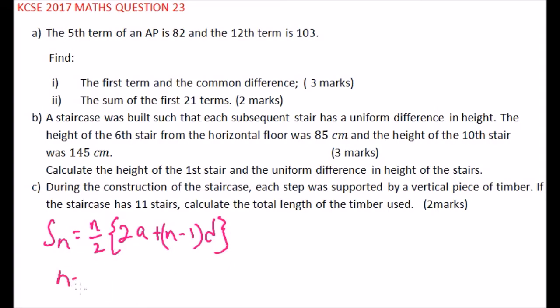Our N is equal to 21. From Part A, we found our A is equal to 70 and our D is equal to 3. So it's a matter of just substituting. The sum of the first 21 terms is equal to 21 over 2, 2 multiplied by A which is 70, plus 21 minus 1 multiplied by 3.